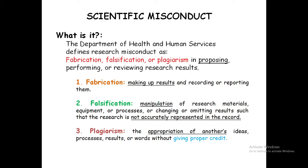Number 1 is fabrication. What is the definition? Fabrication is making up results and recording or reporting them. Number 2 is falsification. It is the manipulation of research materials, equipment or processes, or changing or omitting data or results, such that the research is not accurately represented in the report.